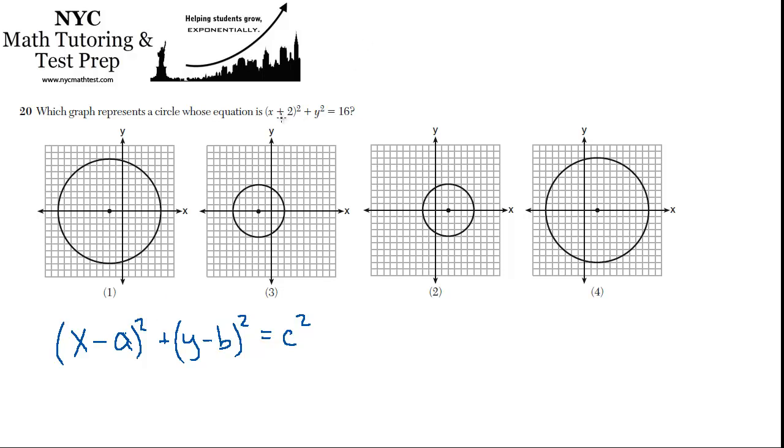So in this case we have x plus 2, but the formula is x minus a. So in order for this to be x plus 2, a must actually be negative 2. And since it's just y squared, b must be 0.